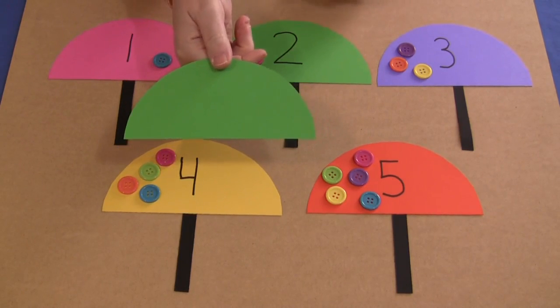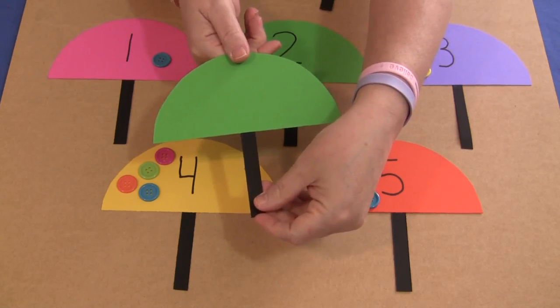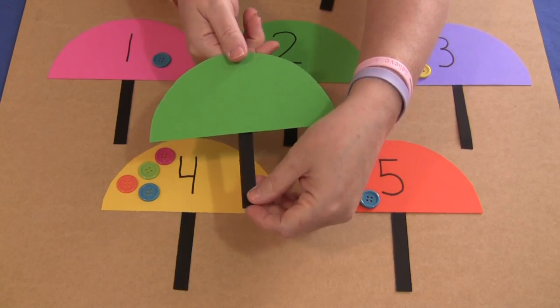And then for the bottom, I just took some black cardstock paper and glued it to the bottom of the umbrella top, and then I wrote whatever numbers I wanted to put on there.